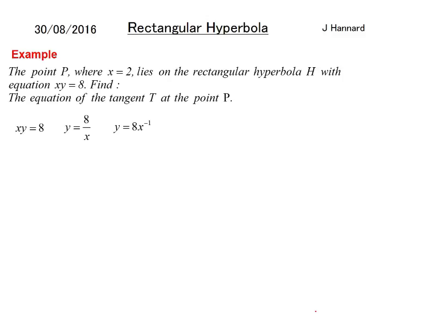Write that in power form please and you get that. Power to the front, knock one off the power and you get that. Write it back in a form that you like to look at. Minus 8 over x squared. Remember though that our x here is 2. So you end up with that. dy by dx equals minus 8 over 4. So dy by dx must equal minus 2. So our gradient at the point 2 is minus 2.